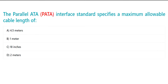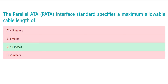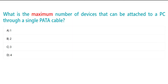The parallel ATA (PATA) interface standard specifies a maximum allowable cable length of: A. One meter. B. Two meters. C. Three meters. D. Four meters.